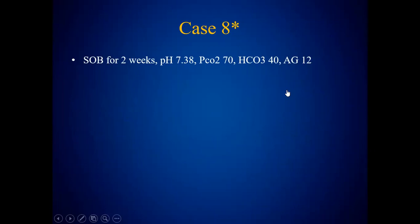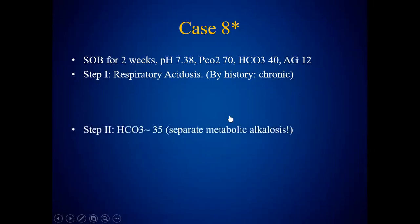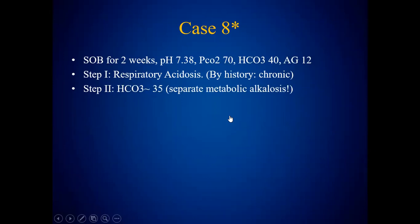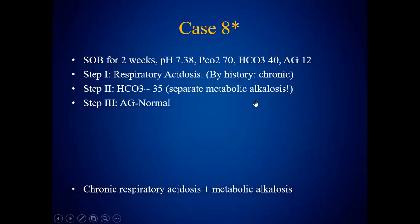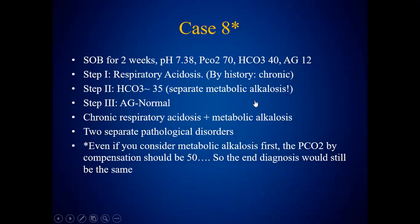Another case: shortness of breath for two weeks. pH 7.3, pCO2 17, bicarbonate 40, anion gap 12. By history it seems chronic — two weeks. pH is normal, but pCO2 is high, so you could label it as respiratory acidosis. Step two: calculating compensation — bicarbonate should be 35 but the patient has 40. So there is metabolic alkalosis too, because it should be 35 but it's 40. Anion gap is normal. So chronic respiratory acidosis and metabolic alkalosis are both present. Maybe someone has given this patient diuretics for shortness of breath. When the pH is normal, you could start with either disorder — the answer would be the same.